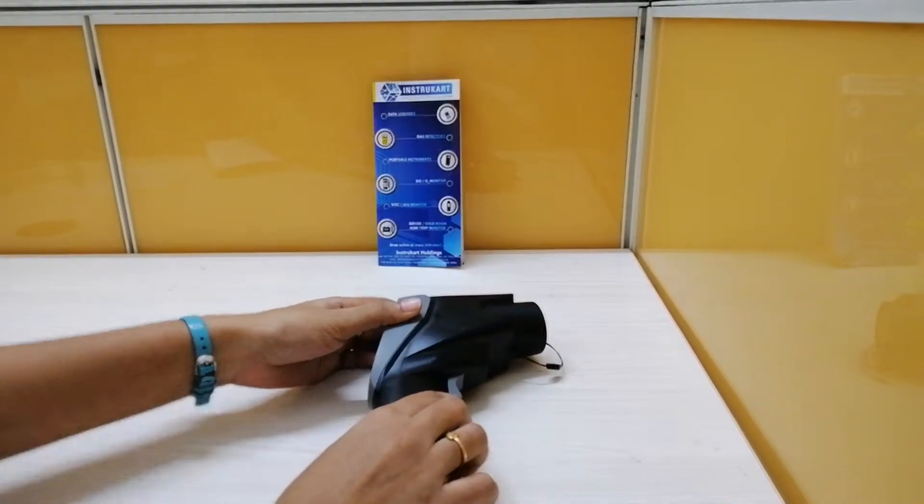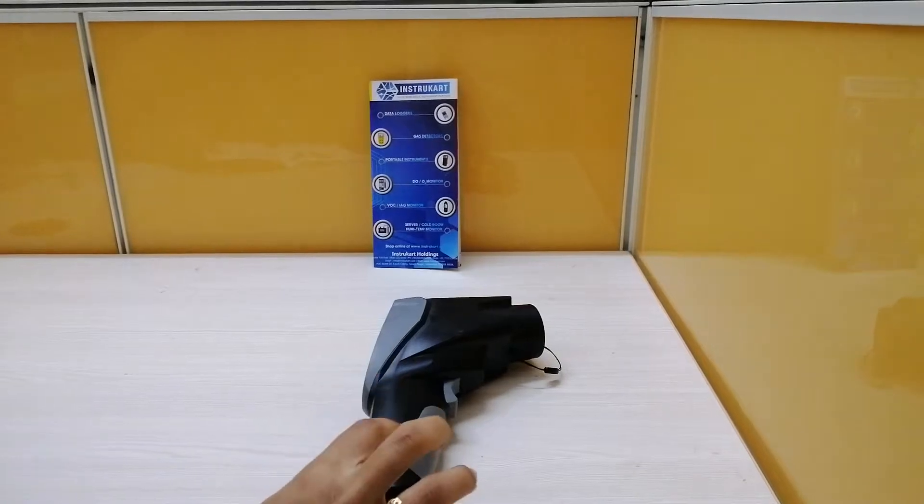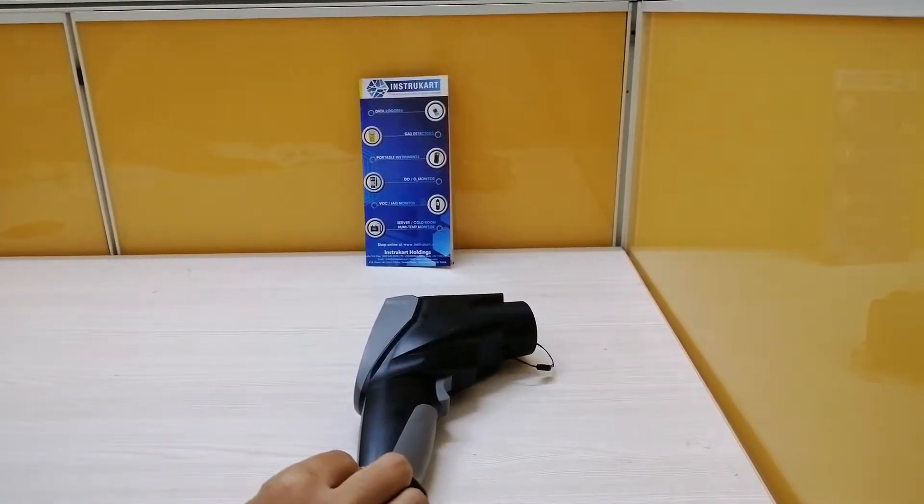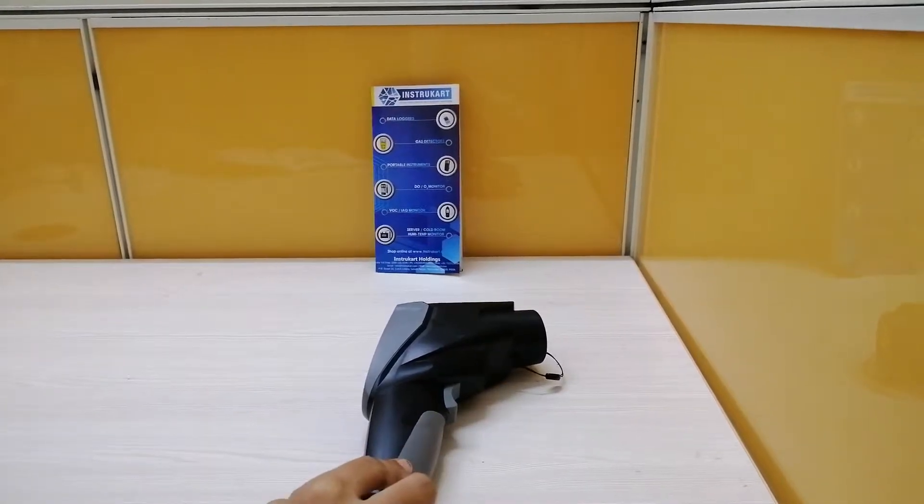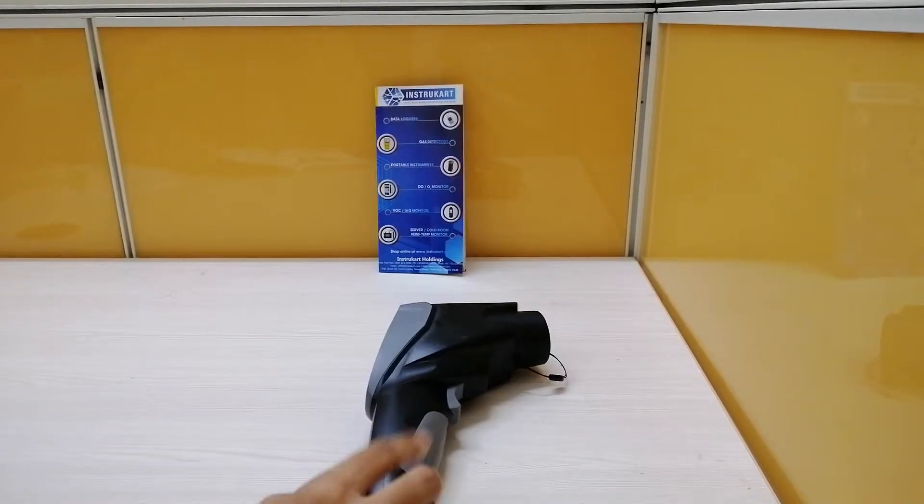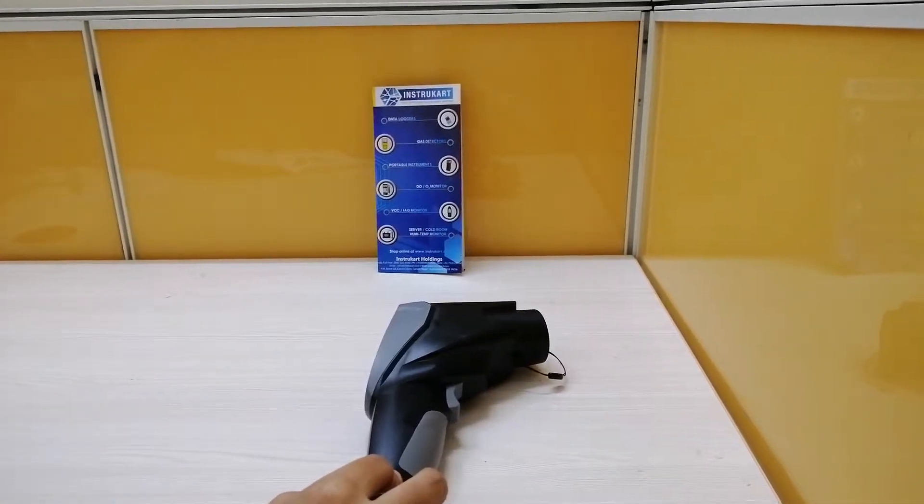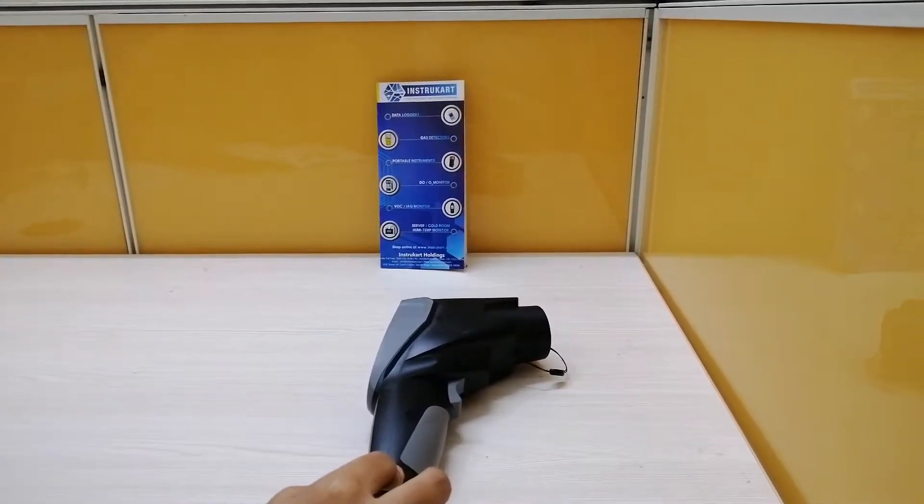Let me walk you through the technical specifications of this product. The distance to spot ratio is 50 to 1 and the spectral range is 8 to 14 micrometers. The laser type is a 4-point laser with an output or wavelength less than 1 mW. The class is 2EN60825.